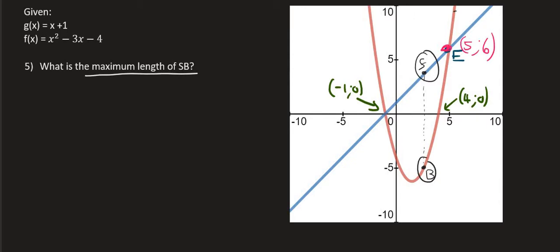What people fail to realize with this one is that SB is a line that can slide from left to right. So it looks like this. So SB can slide. We don't know exactly where it's going to go but we're looking for the place where it will have the maximum length. Now how do we do that?